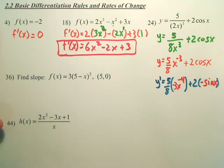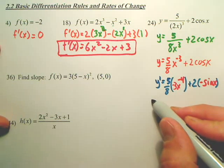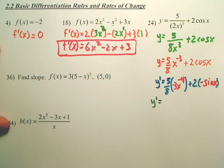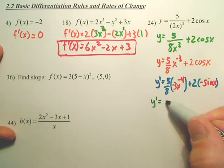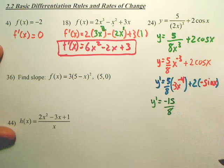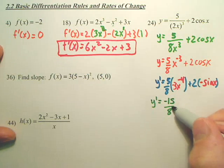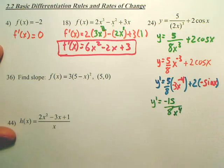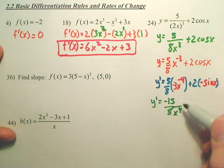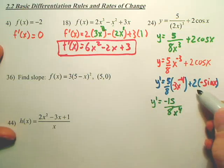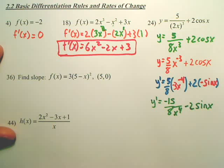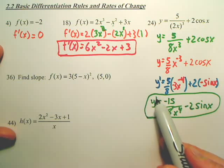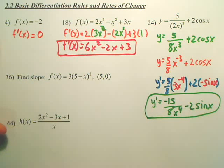Now simplify. 5 times negative 3 is negative 15, over 8 — and since the exponent is negative 4, the x to the fourth goes back to the denominator. The cosine term becomes negative 2 sine x. That's your final derivative, written with the prime sign.